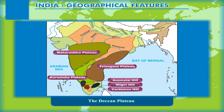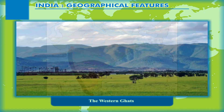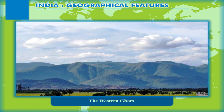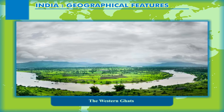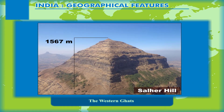The Western Ghats lie on the western edge of the Deccan Plateau and stretch from the river Tapi to Kanyakumari, about 50 to 60 kilometers away from the coast. The average height of the Western Ghats may reach as high as 2440 meters, ranging up to 1200 meters at some points. There are steep-sided valleys, narrow gorges, and waterfalls. Also known as the Sahyadri, important peaks include Kalsubai at 1646 meters and Salher at 1567 meters.